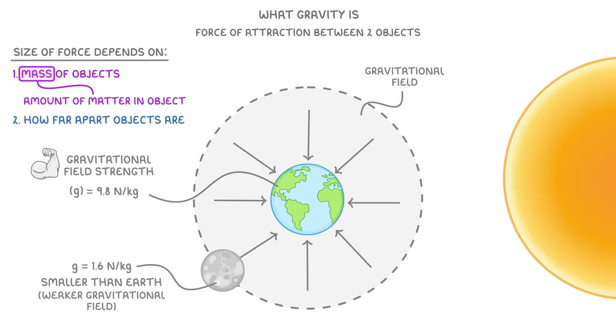The forces of gravity between the Sun and Earth are also really strong, even though they're quite far away from each other. This is because the Sun is so enormous that its gravitational field strength is around 274 N per kg.